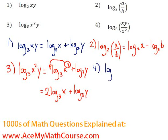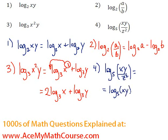How about 4? Question number 4. Okay, now since we are dividing these contents, I can just have log base 5 xy minus log base 5 of z squared.